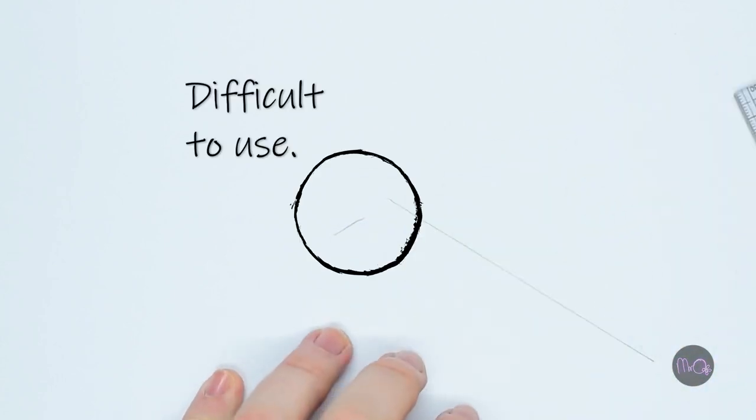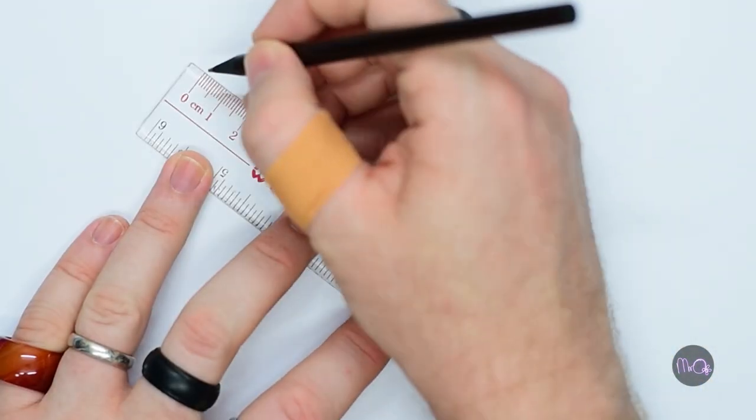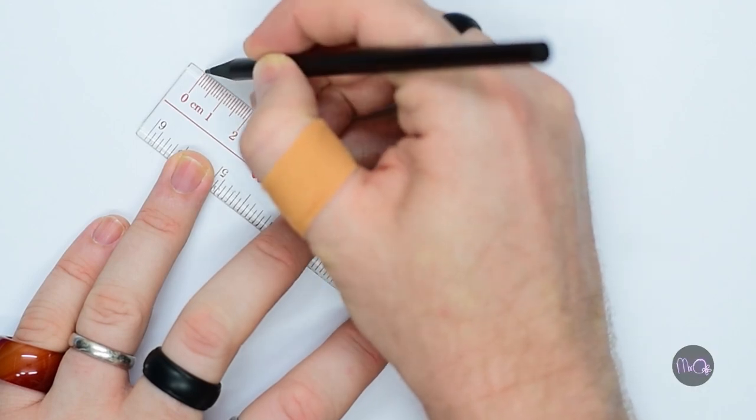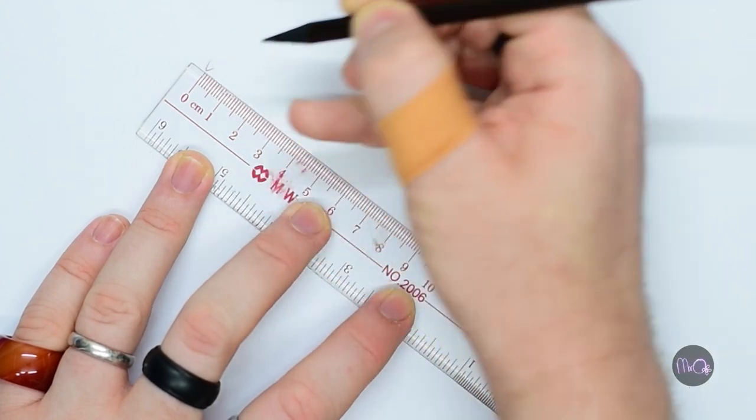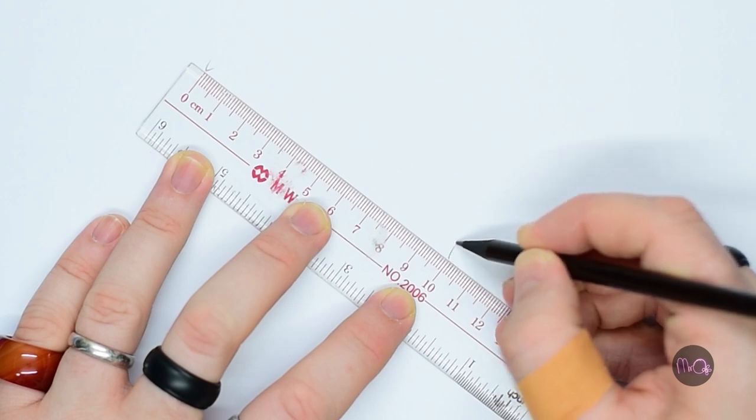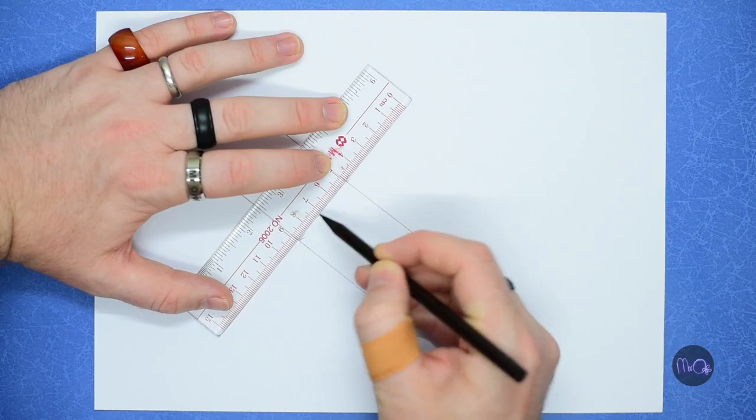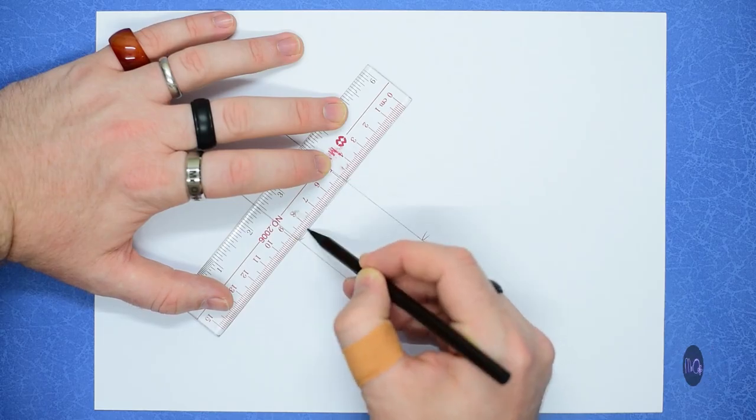For super accurate marking, use a little V that comes away from the mark you need. Then line up your ruler with your points of the Vs. Oh, that's nice.